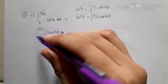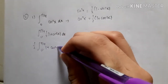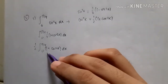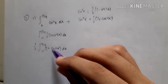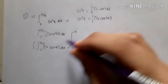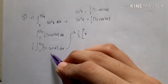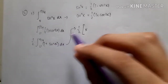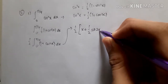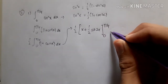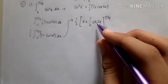We move the constant one-half to the front. The integral of 1 is x. The integral of cos 2x is (1/2) sin 2x — because the integral of cosine is sine, and since the argument is 2x, we get a factor of one-half. So we have the expression with the limit from π/4 to 0.